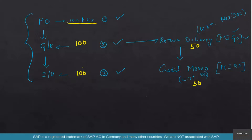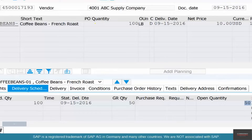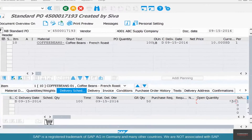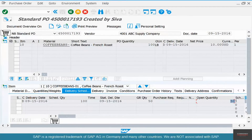But what about the original requirement of 100 pounds? We needed 100 pounds of coffee — that's why we ordered 100. But we lost 50 because of a quality issue, so we need 50 more. And that's what is reflected in the open quantity in SAP — it says open quantity is 50.